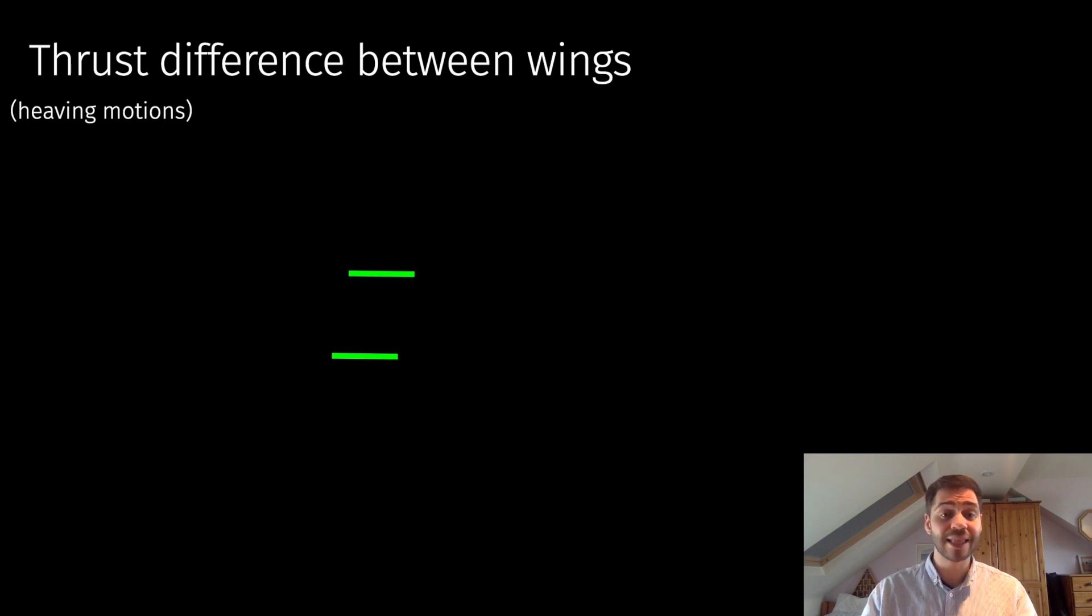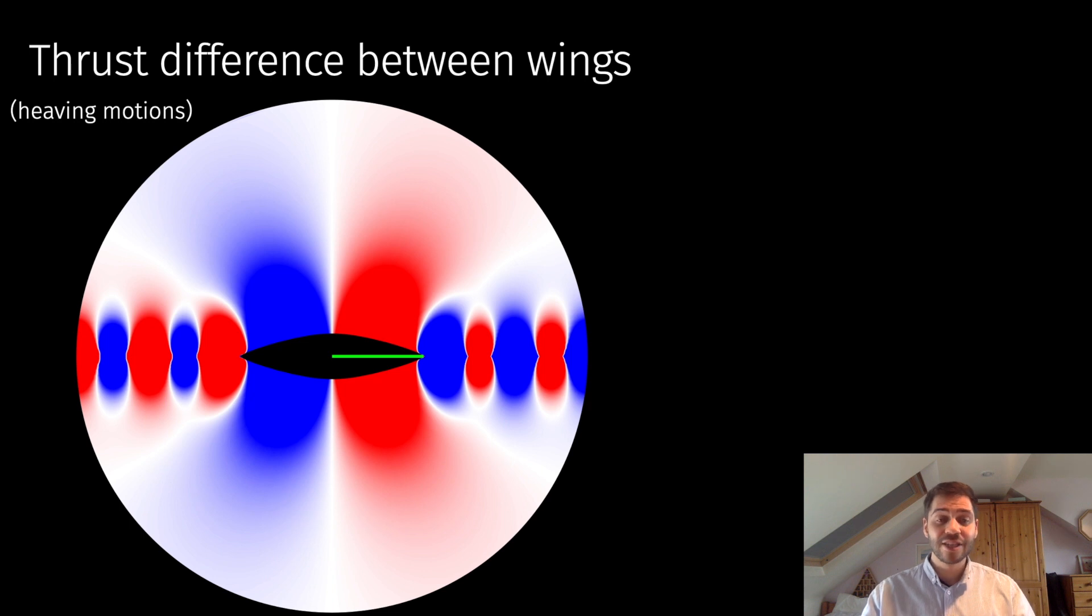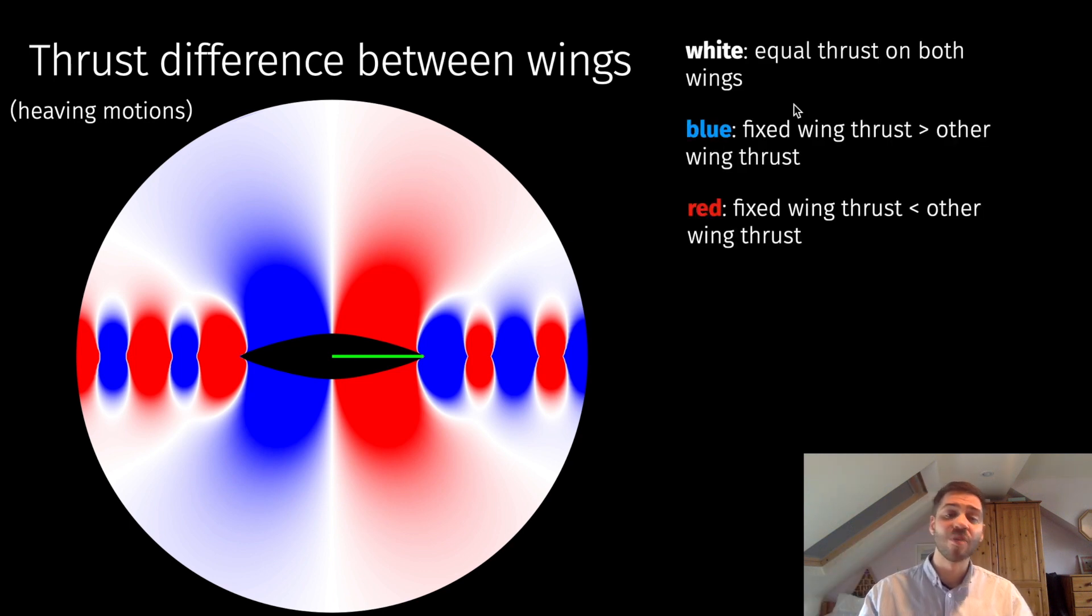If we do that, then we get a color plot like this. As I just explained, one of the wings is fixed, although it's executing these small amplitude motions, and we're computing the thrust difference for when the other wing is in a different position. Here, the white color indicates that the thrust is equal on both the wings, whereas blue indicates that this wing has larger thrust, whereas red indicates the converse.